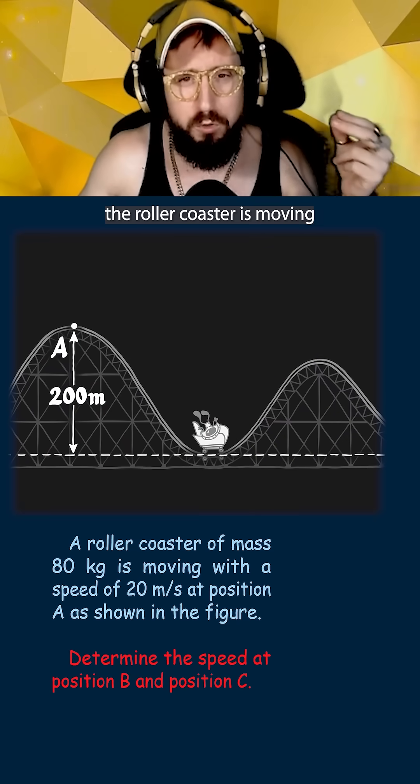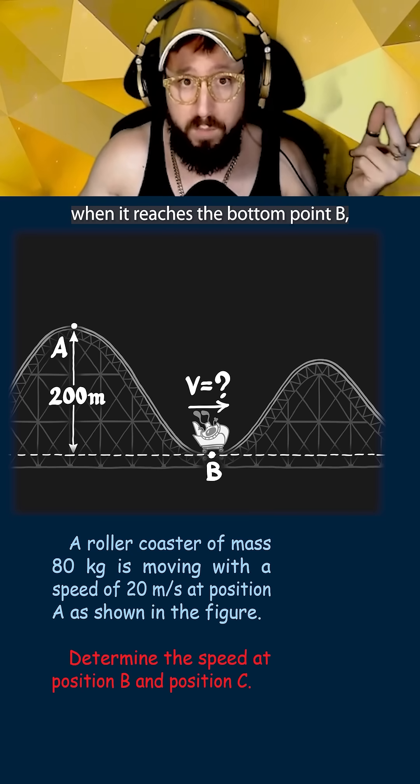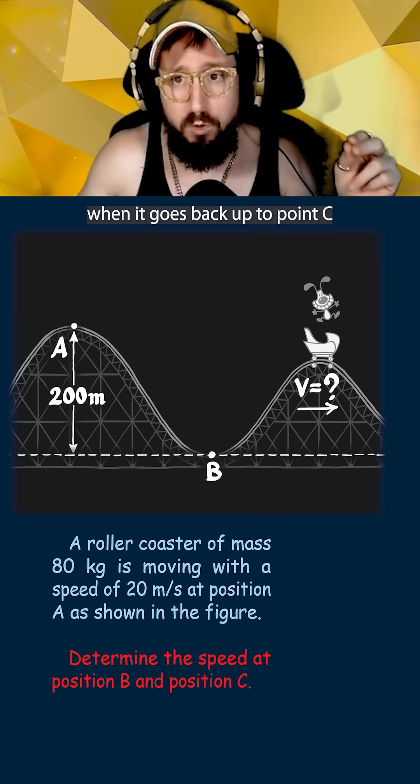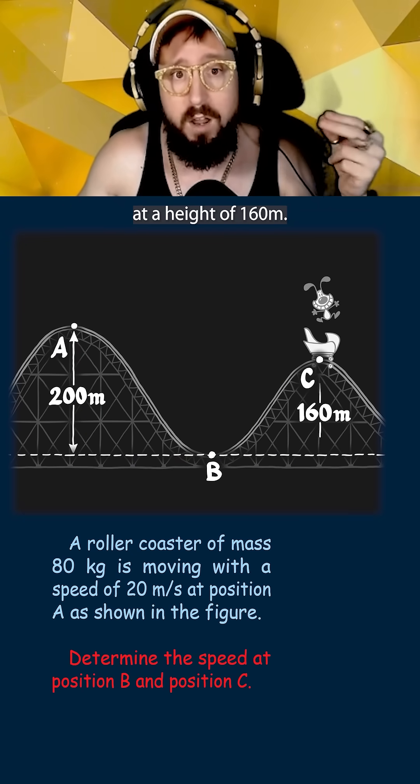We're then asked to figure out how fast the roller coaster is moving when it reaches the bottom, point B, and how fast it is moving when it goes back up to point C at a height of 160 meters.